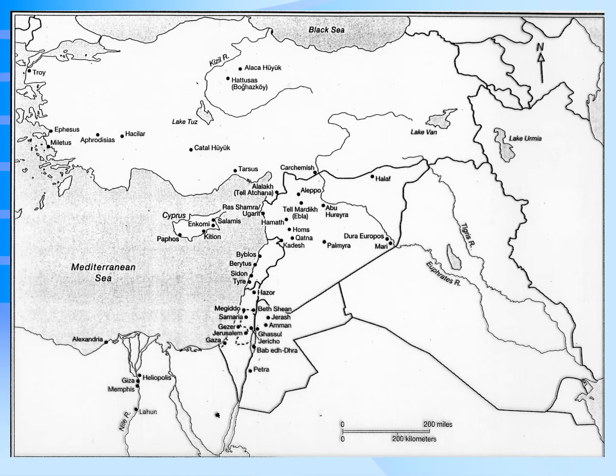From Neolithic times, Çatal Hüyük. To the south, where you see Alexandria, Giza, and Memphis — that is Egypt. And then near the middle, the area of modern Israel, Palestine, and Lebanon. This map gives the borders for the modern nations, but these are all ancient sites.